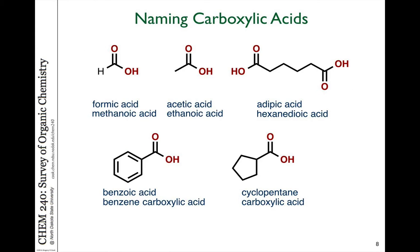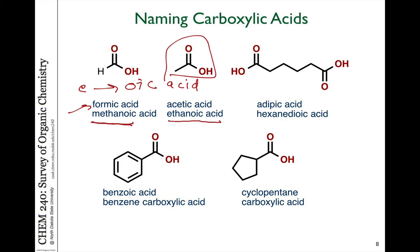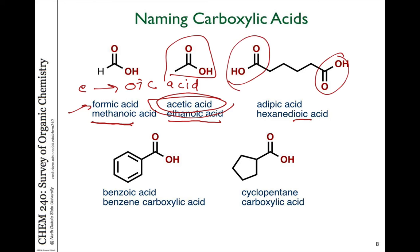In naming acids, the IUPAC system is to drop the E off the end of the parent alkane name and change it to OIC, then add the word acid. For example, the one-carbon acid commonly called formic acid is called methanoic acid in IUPAC naming, and the two-carbon acid is called ethanoic acid, though nearly all references use its common name acetic acid. If it has two carboxylic acid groups, it's a dioic acid — for example, hexanedioic acid, commonly known as adipic acid.